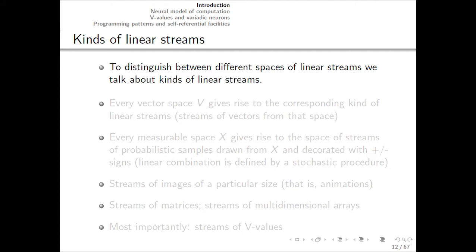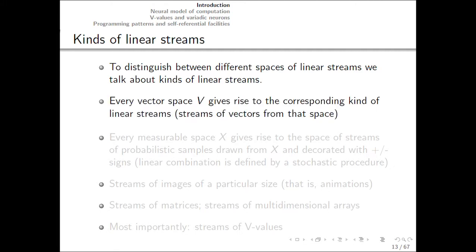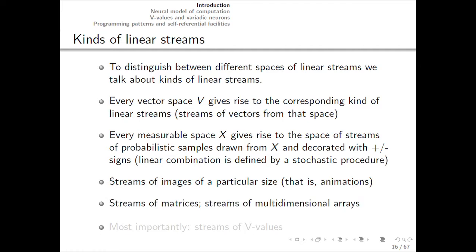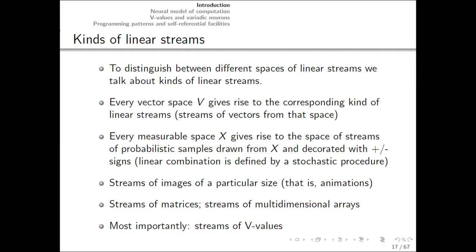Now let's look at examples of various linear streams. To distinguish between different spaces of linear streams, we'll talk about their kinds. Every vector space gives rise to a different kind of linear streams, streams of vectors from that particular space. A measurable space gives rise to the space of streams of probabilistic samples drawn from that space. Streams of images resulting in animations, streams of matrices, streams of multidimensional arrays, and most importantly for us, streams of vector-like values based on nested dictionaries, which we'll talk about in more details later.